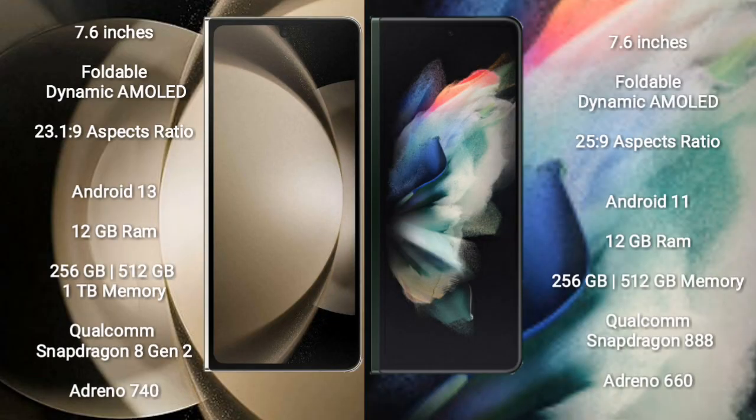Samsung Galaxy Z Fold 5 comes with a 7.6 inches foldable dynamic AMOLED display. Samsung Galaxy Z Fold 3 also comes with a 7.6 inches foldable dynamic AMOLED display.